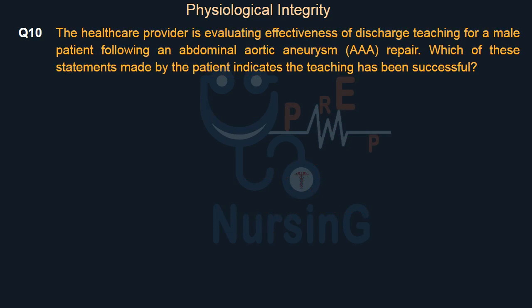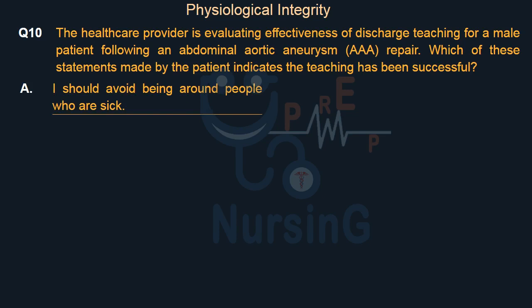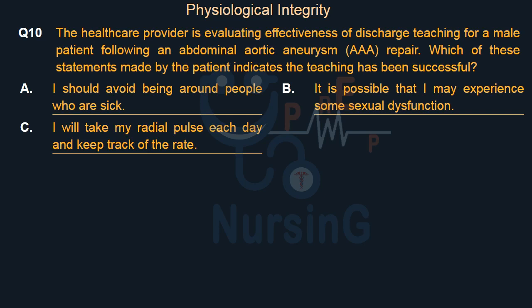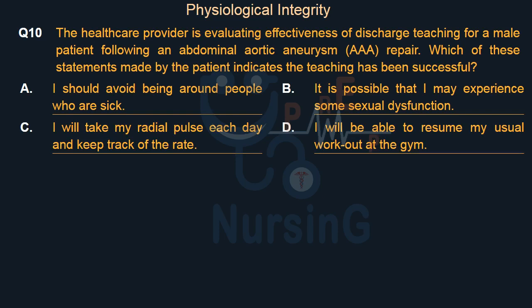The healthcare provider is evaluating effectiveness of discharge teaching for a male patient following an abdominal aortic aneurysm (AAA) repair. Which of these statements made by the patient indicates the teaching has been successful? Option A: I should avoid being around people who are sick. Option B: It is possible that I may experience some sexual dysfunction. Option C: I will take my radial pulse each day and keep track of the rate. Option D: I will be able to resume my usual workout at the gym. The right answer is Option B: It is possible that I may experience some sexual dysfunction.